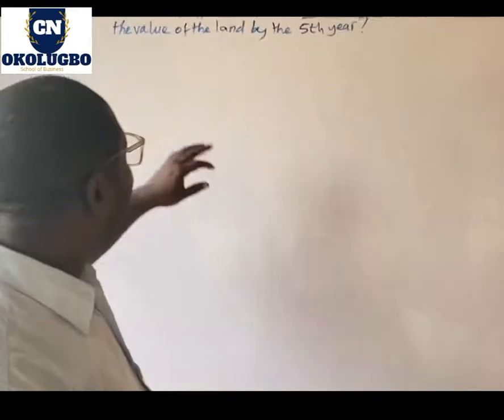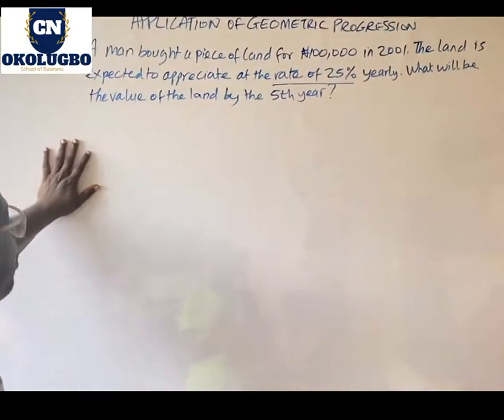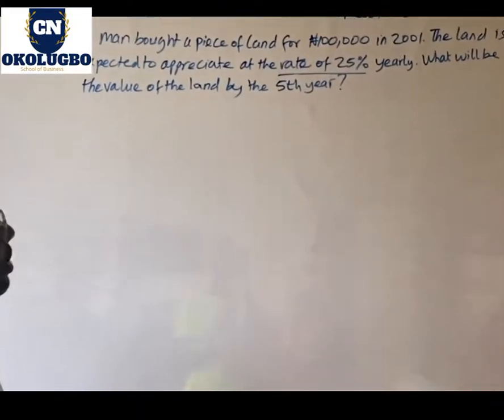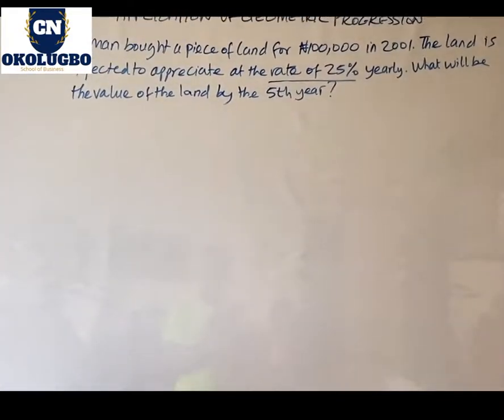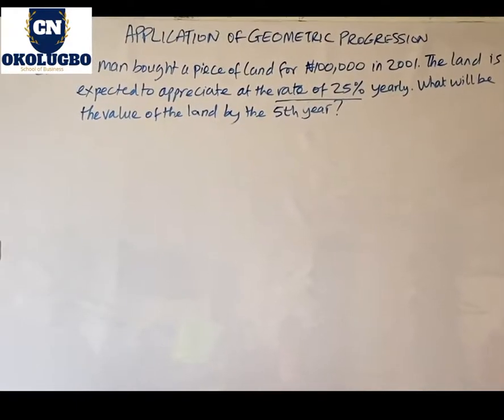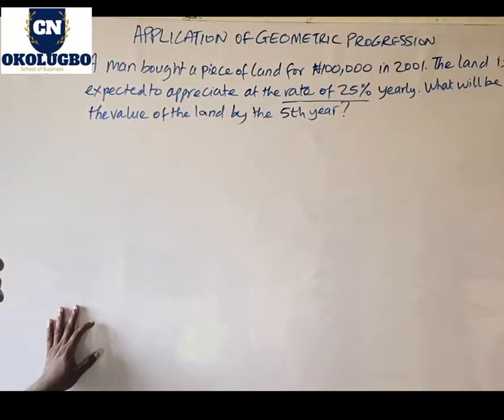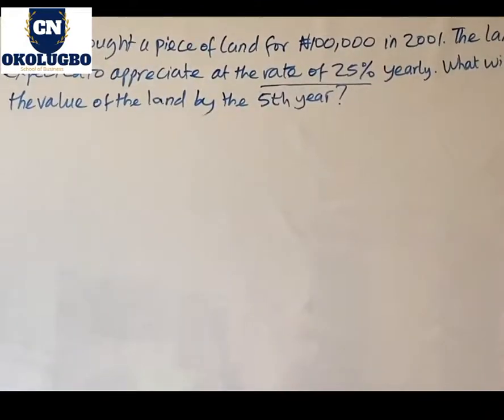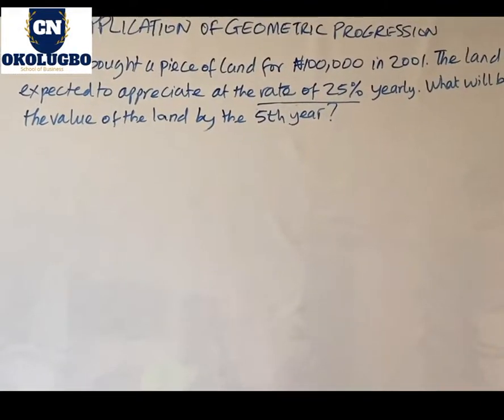Let's look at what we have today. As you can see on the board, we have a question. Example one: a man bought a piece of land for 100,000 in 2001. The land is expected to appreciate at a rate of 25% a year. What will be the value of the land by the fifth year?